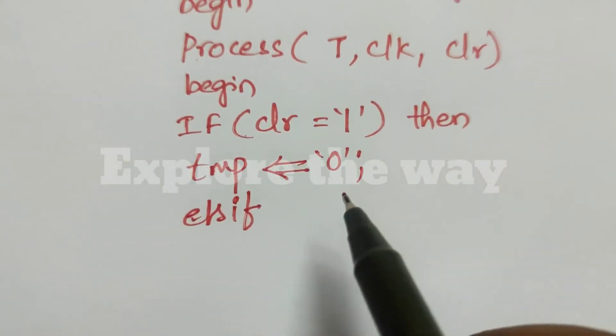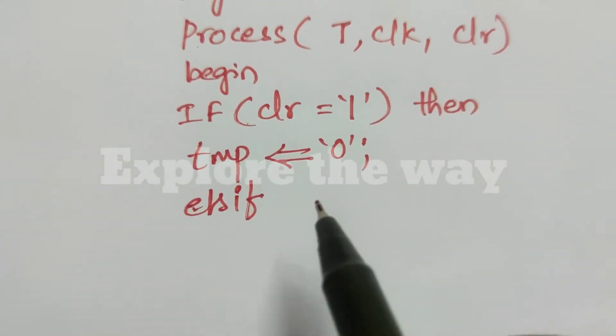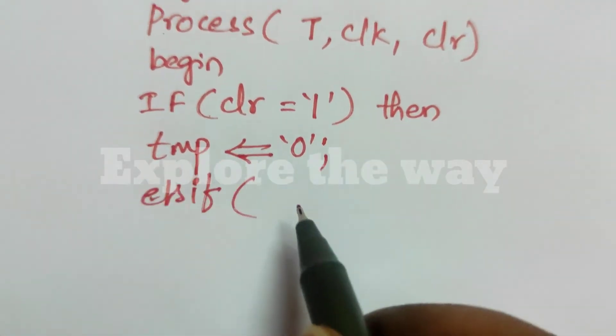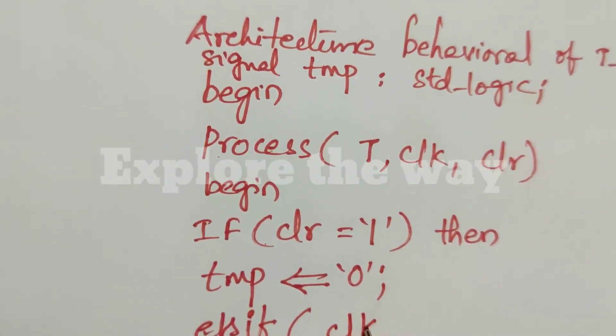So, next, else if. Else if means clear is zero. So, when clear is zero, at the positive edge of clock.